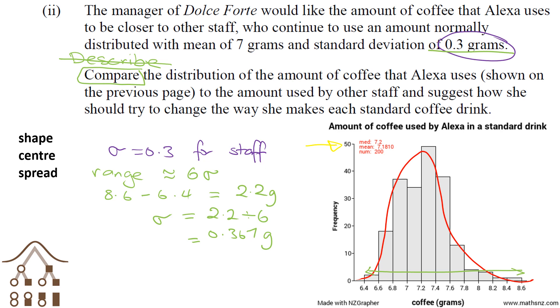For the second excellence, we need to answer this last part of the question. We need to suggest how she should try to change the way she makes coffee.